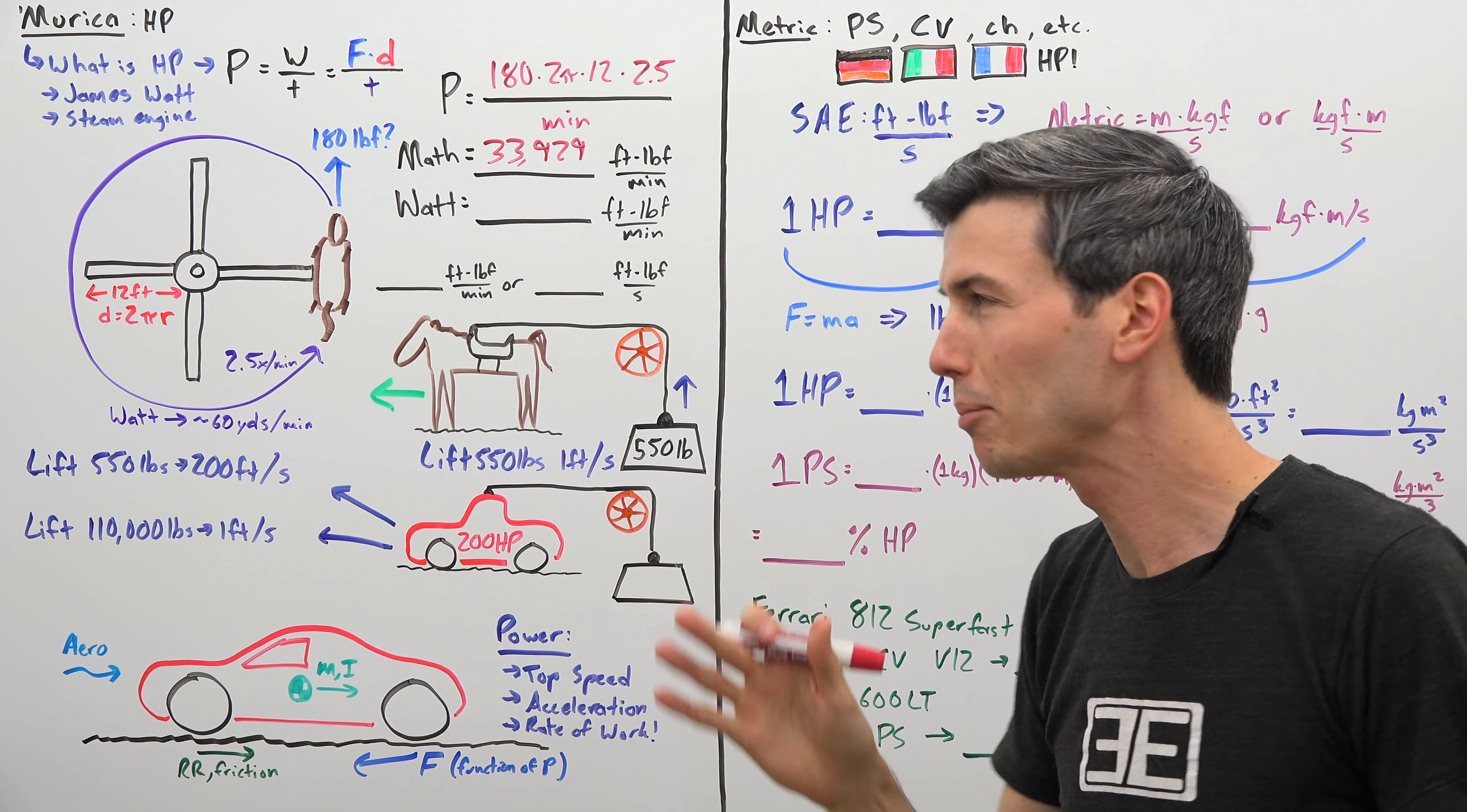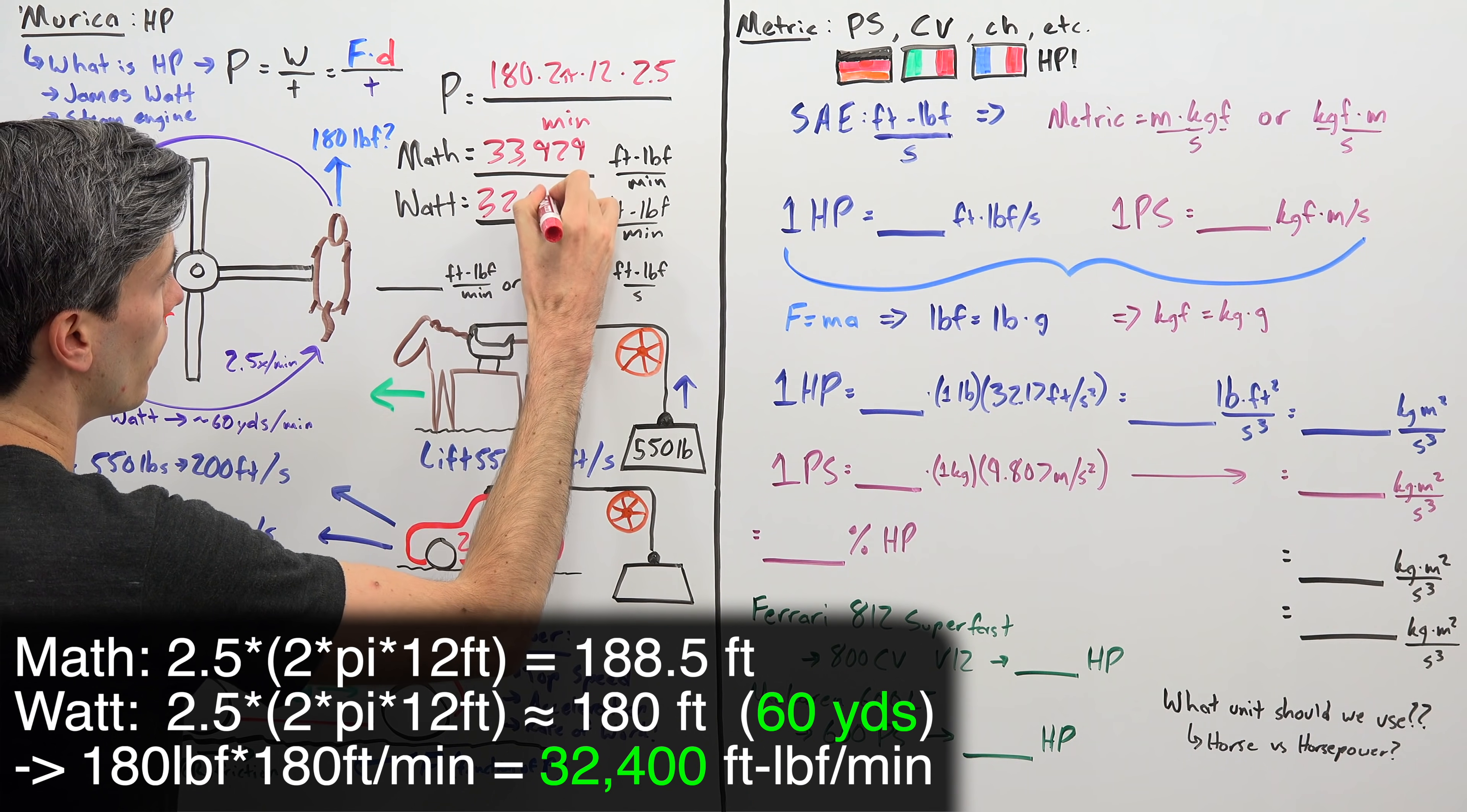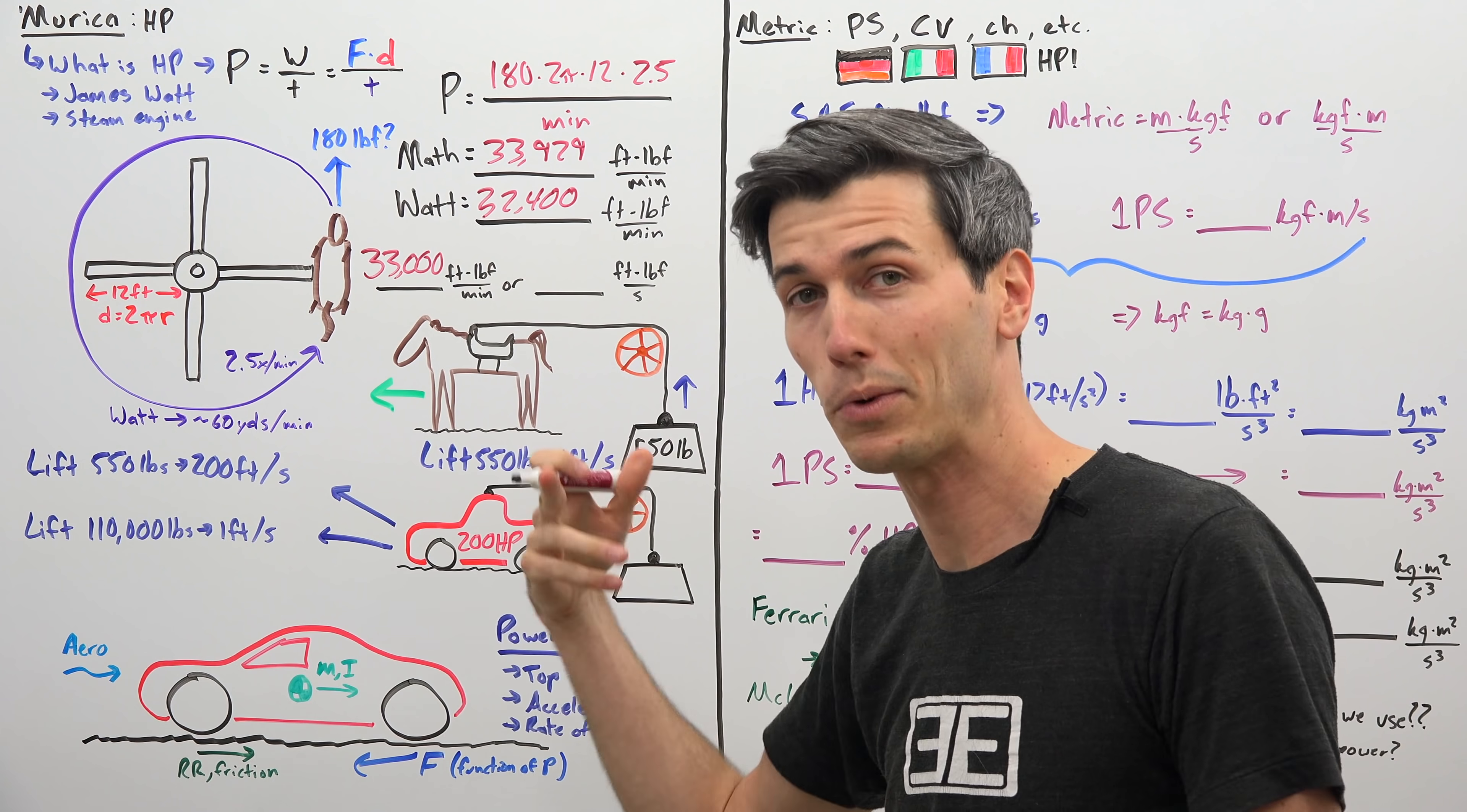Now he did a bit simpler than this, again back of the napkin math that he's kind of going off of, and he just said well 2.5 times per minute at this radius that's about 60 yards per minute. So that equals 180 pound force multiplied by 180 feet per minute and he arrived at 32,400 foot-pound force per minute. Now later in his writings he starts to write this as 33,000 foot-pounds force per minute. Maybe he's just rounding up, we don't exactly know, but that's what he starts going with. Again, this is like it's crazy that this is the unit we're using today and this is how we got to it.